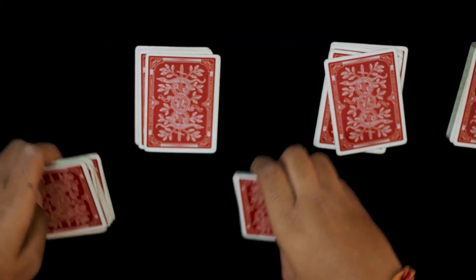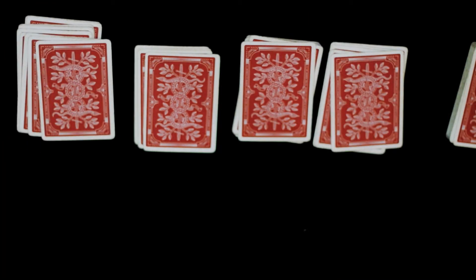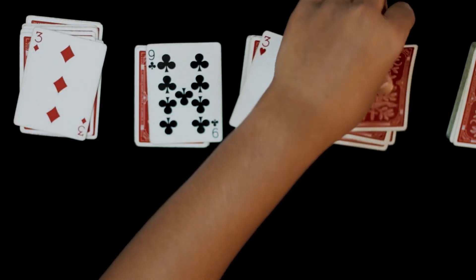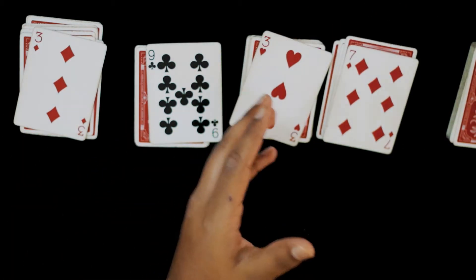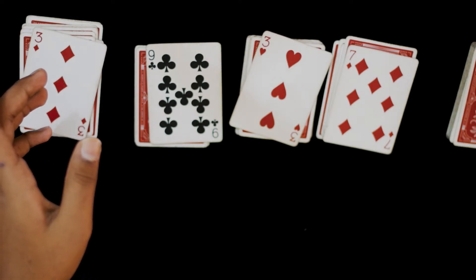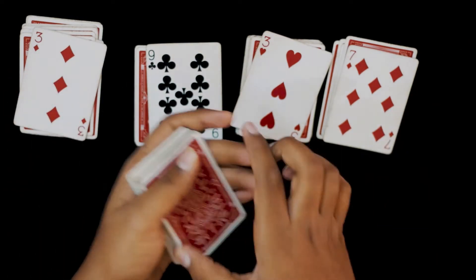Alright, so now at this point you have these 4 piles left, and the trick is actually done. You can actually flip over the top cards. These are the 3 of diamonds, 9 of clubs, 3 of hearts, 7 of diamonds. You can just add up the values and it is 22, so you can just count these cards and it's actually 22.